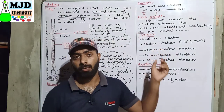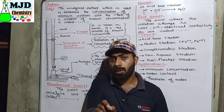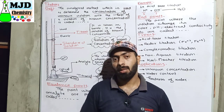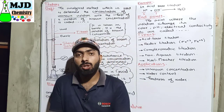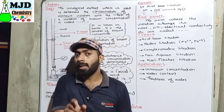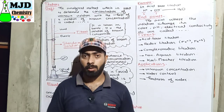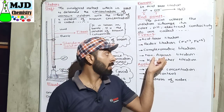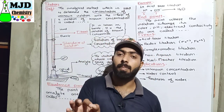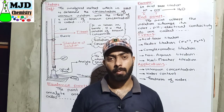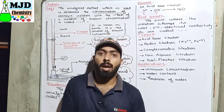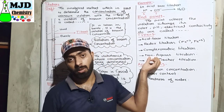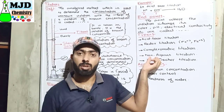Next is complexometric titration. It is used in the determination of metal ions — for example, to determine the concentration of calcium and magnesium ions in hard water. Another type is non-aqueous titration, used when some substances are not completely dissociated in water; in that case, a non-aqueous solvent is used to determine the concentration of that substance.